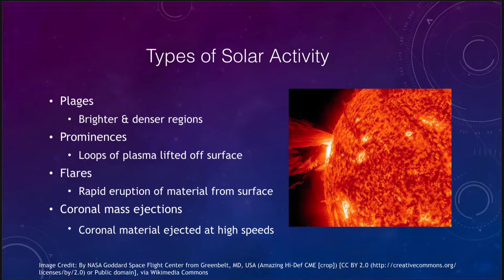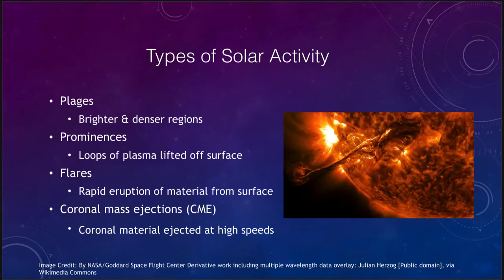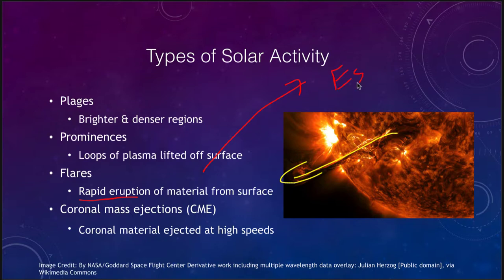A prominence may take days or even a week to slowly lift material off the surface of the sun, whereas in a very short timeframe — a matter of minutes — a solar flare can do the same thing. When a solar flare occurs, we get material being ejected rapidly off the surface of the sun. A very rapid ejection is actually fast enough to expel that material from the surface, meaning it travels out into the solar system. Very intense flares can really get material off the surface of the sun and get that material to the Earth.